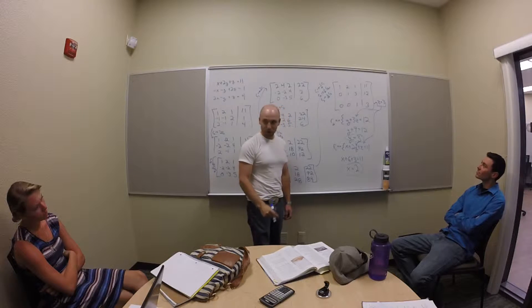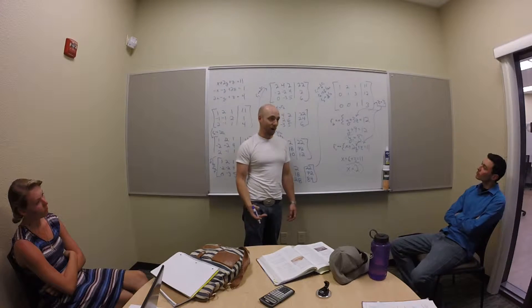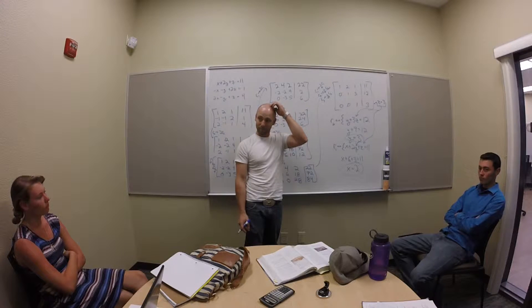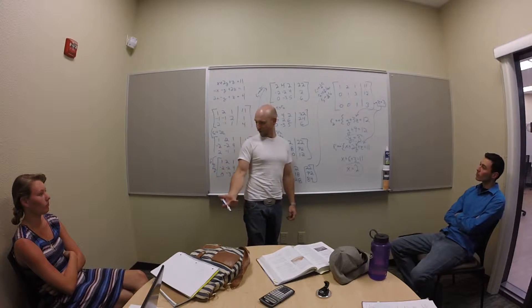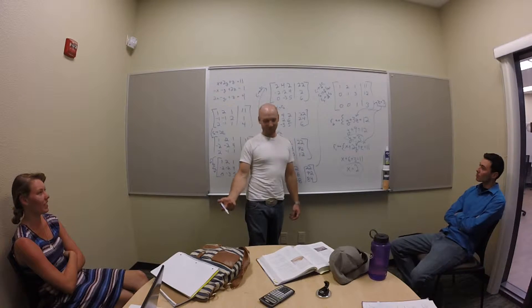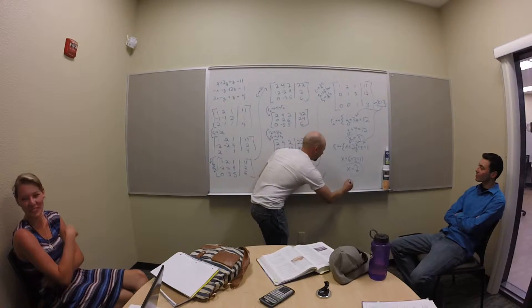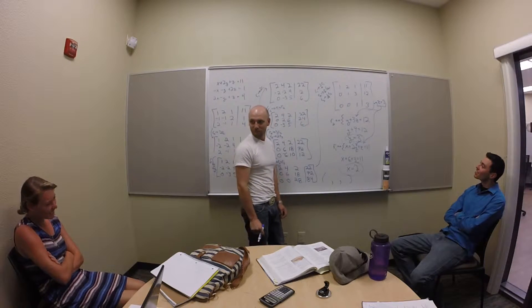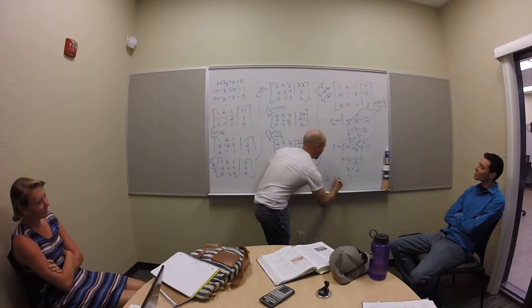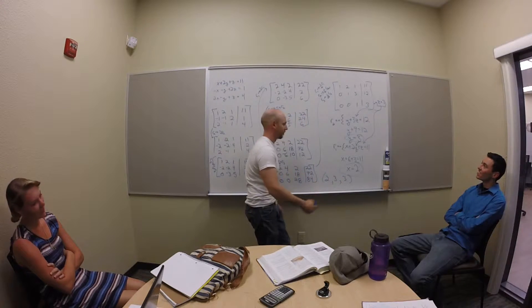So how do I write my answer? Like an ordered pair but three — which you'd call an ordered triple. So the answer is (2, 3, 3), going x, y, z.